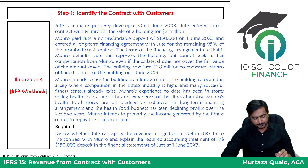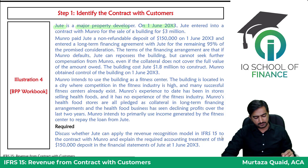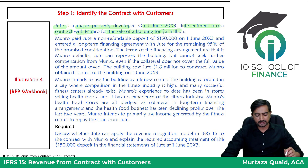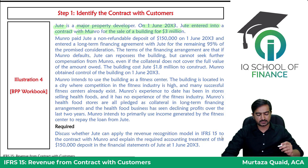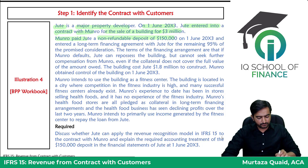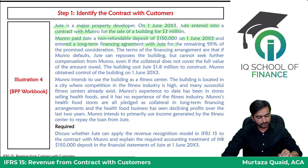Jute is a major property developer. On 1st June 2003, Jute entered into a contract with Munro for the sale of a building for three million dollars. Munro paid Jute a non-refundable deposit of one hundred and fifty thousand dollars on 1st June 2003.